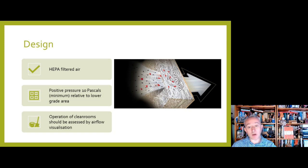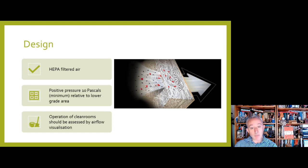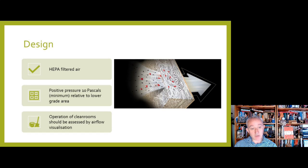Between clean rooms of different grades or different purposes — such as between a corridor and a process room — the minimum pressure differential is 10 pascals, though it often may need to be higher. Set points for pressure differentials should be detailed within the contamination control strategy, with every interface justified within that strategy. Ideally this is alarmed, and every alarm excursion must be adequately assessed.